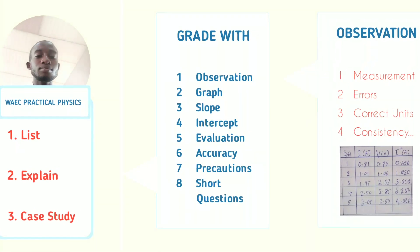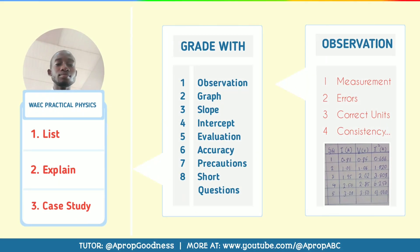Starting with number one — observation. You have measurements, and they check if your measurement is correct. There is a format: direct measurement and evaluated measurement. Direct measurements you get directly from your apparatus, and you are required to give them in at least one decimal place. This must be consistent throughout — if you use one decimal place throughout, you must use one decimal place throughout. If you use two decimal places for a particular value, you must use two decimal places to the end.